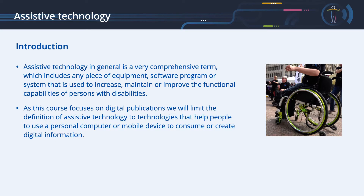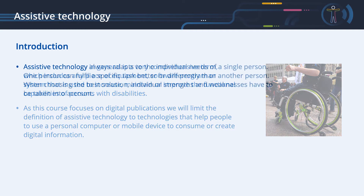This might include a wheelchair or a prosthesis. As this course focuses on digital publications, we will limit the definition of assistive technology to technologies that help people to use a personal computer or mobile device to consume or create digital information.